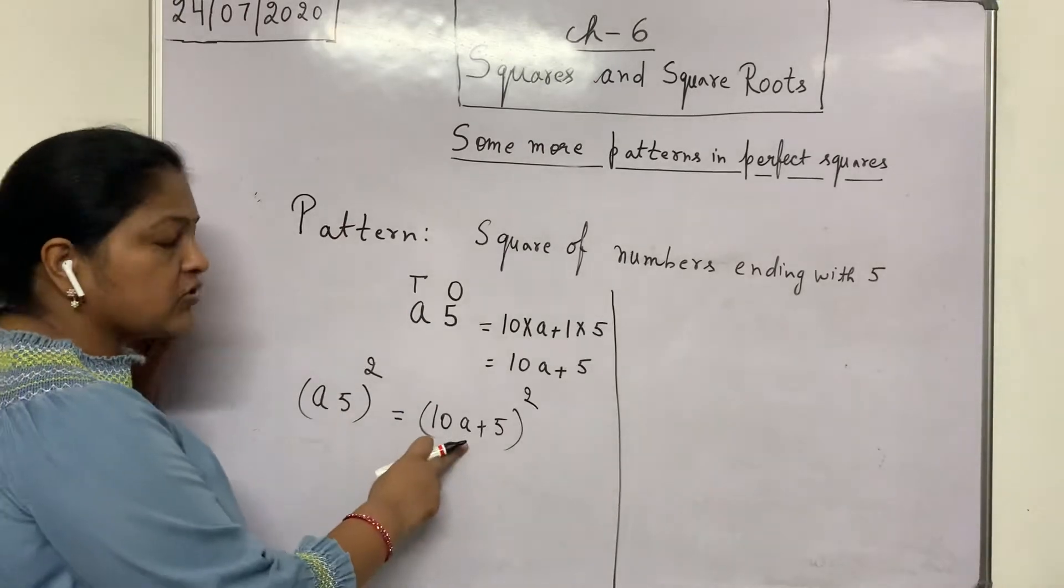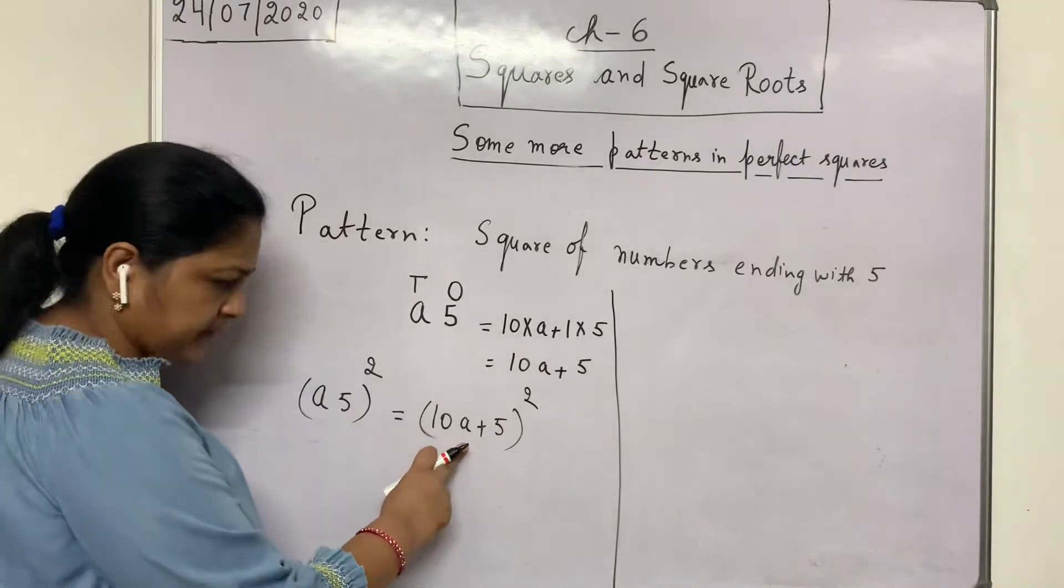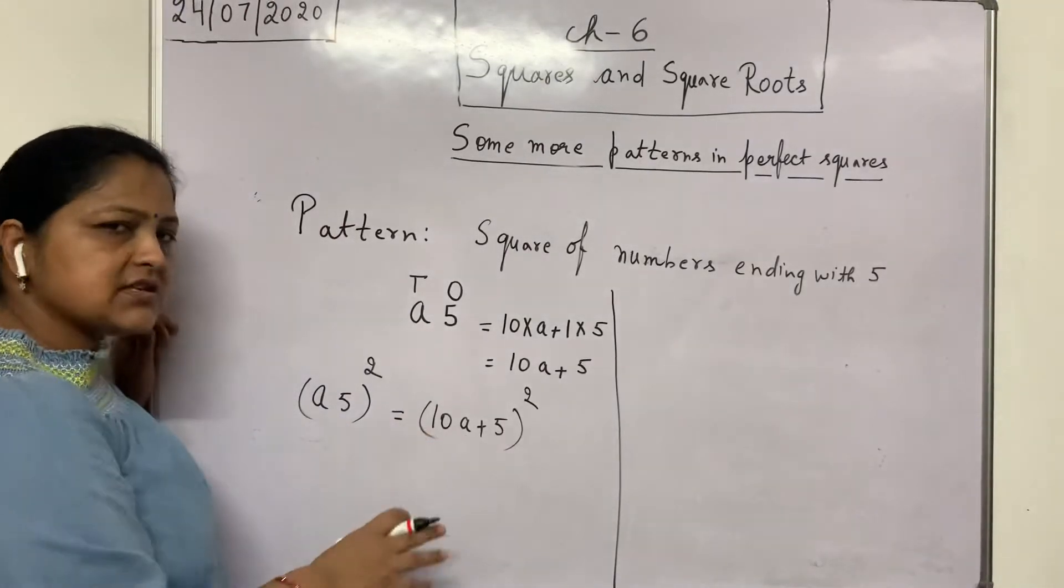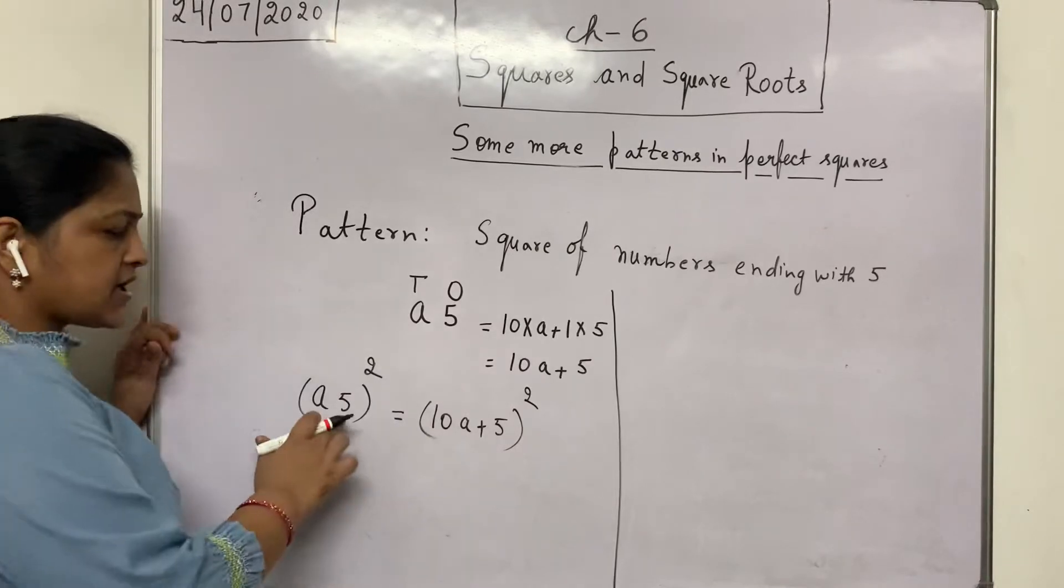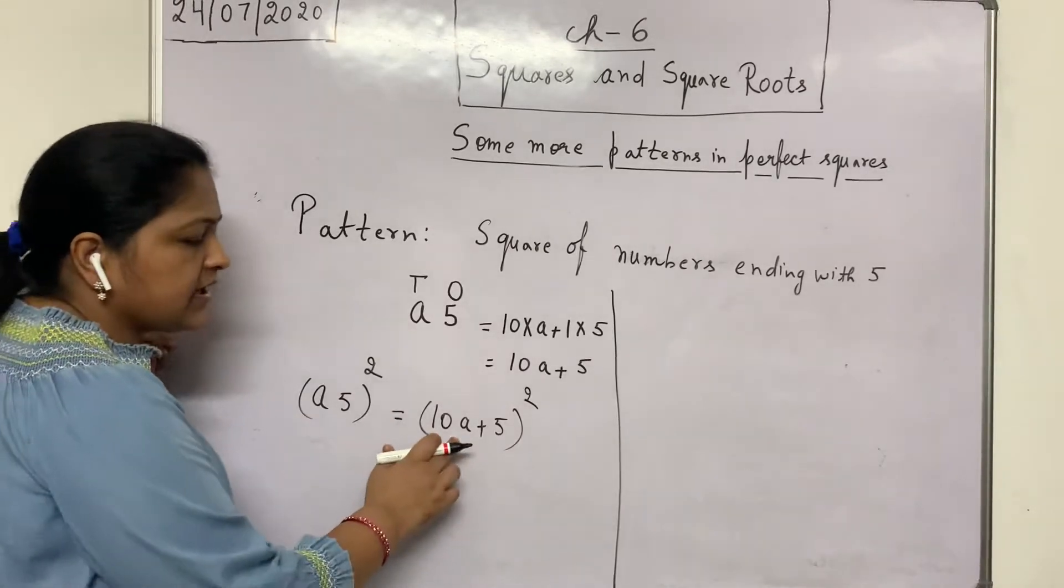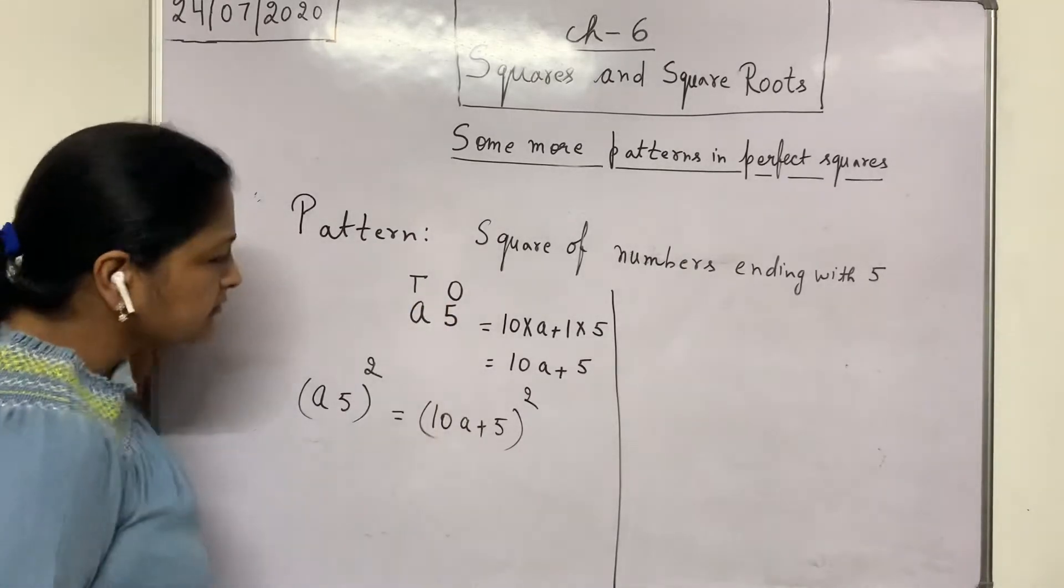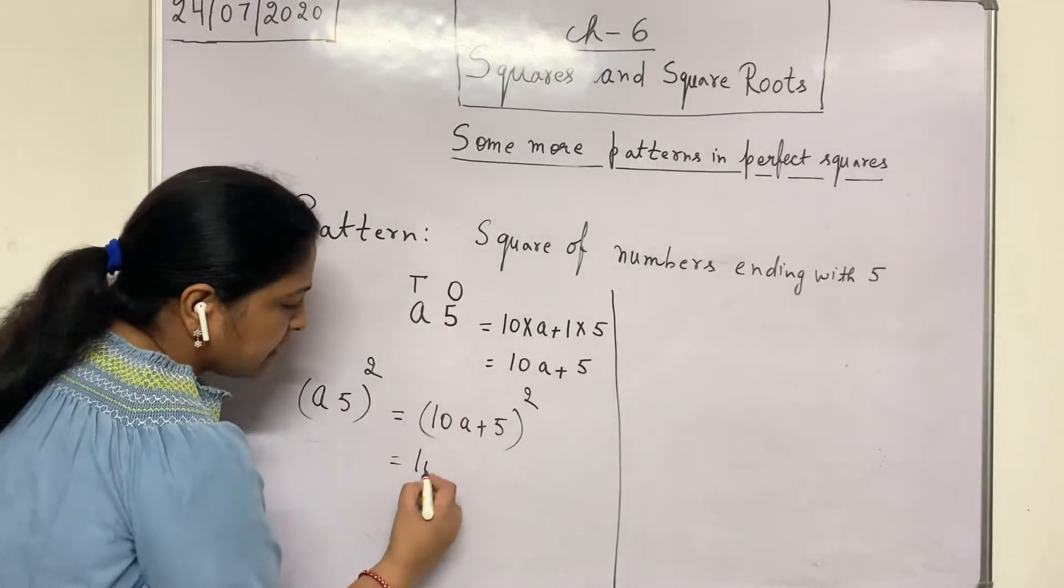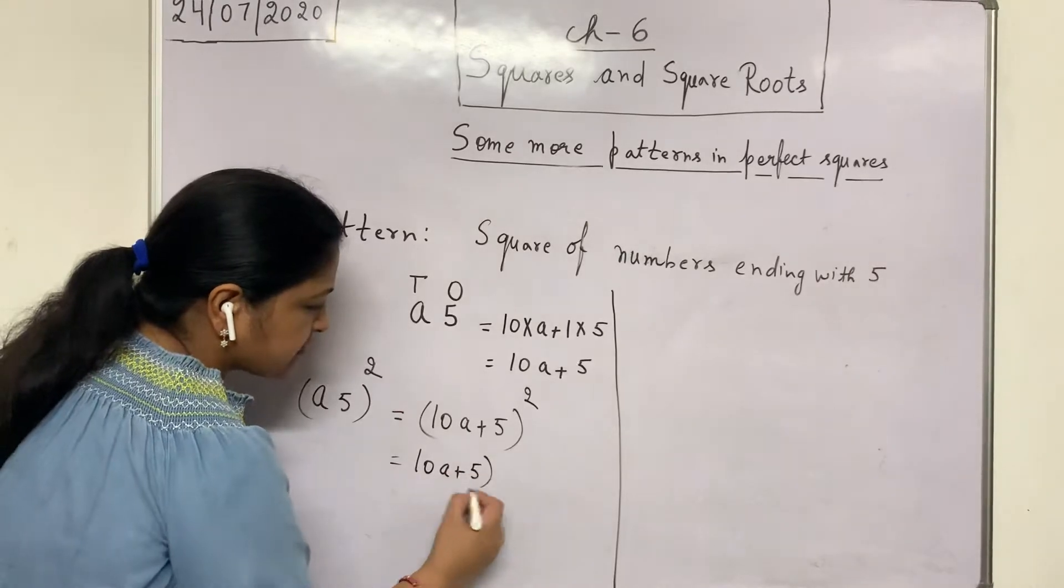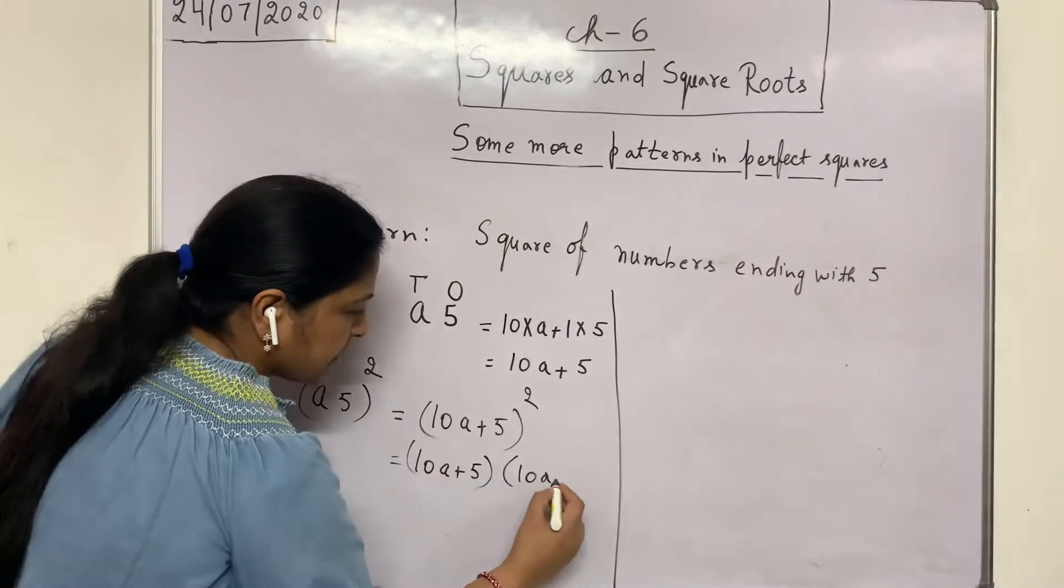Every time when we have to work with a 2-digit number, we use its general form. The general form of a 2-digit number is 10 into tens place digit plus 1 into ones place digit. Now square means multiply with itself: 10a plus 5 into 10a plus 5.